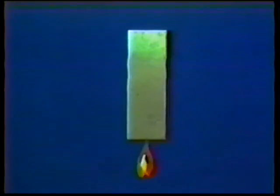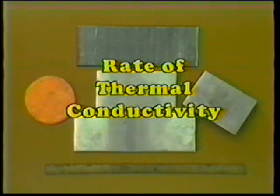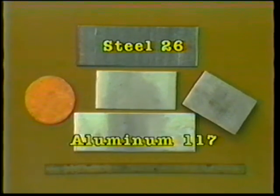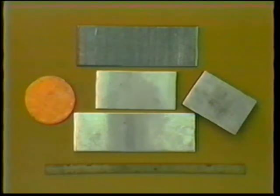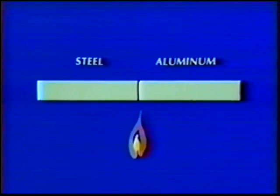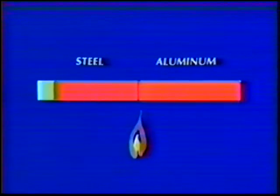Metals have another property related to heat: the rate at which heat will travel through the metal, called the rate of thermal conductivity. This rate, like the expansion coefficient, is about the same for each metal but varies greatly between metals. For example, it is 26 for steel and 117 for aluminum. The nature of this property is easily demonstrated by holding identical size pieces of steel and aluminum in a flame — heat travels much faster in the aluminum.